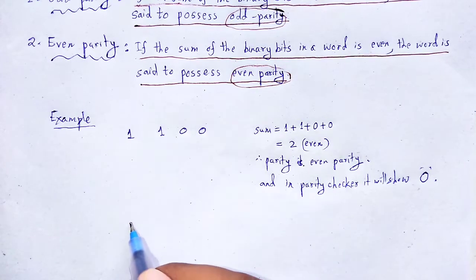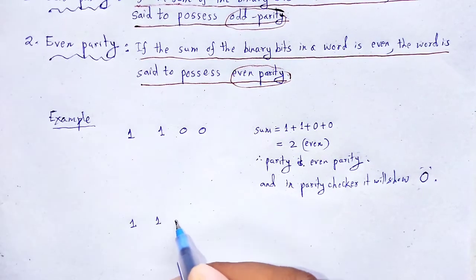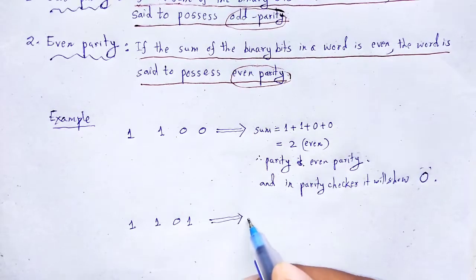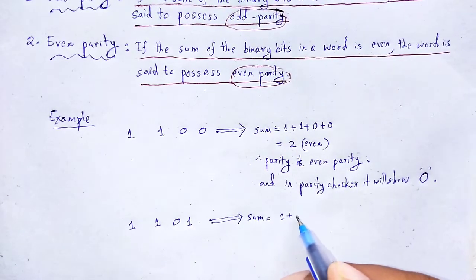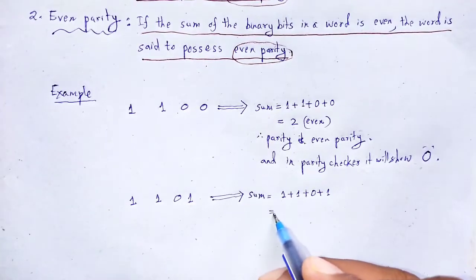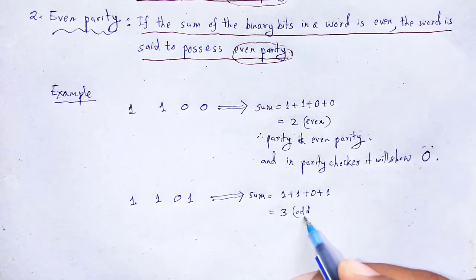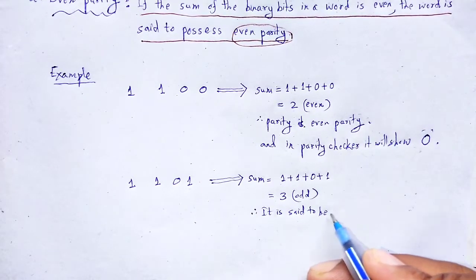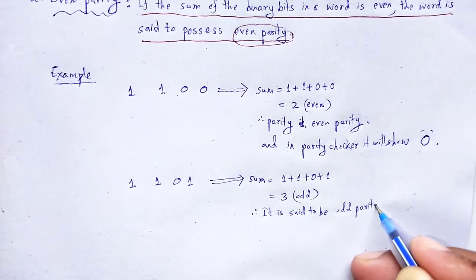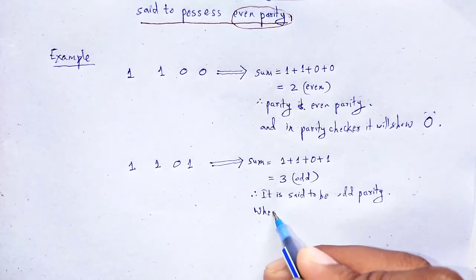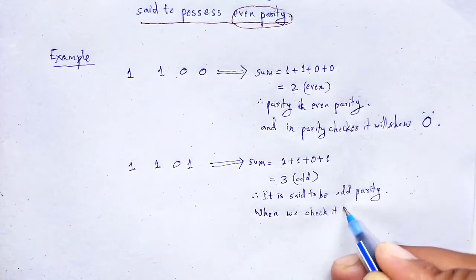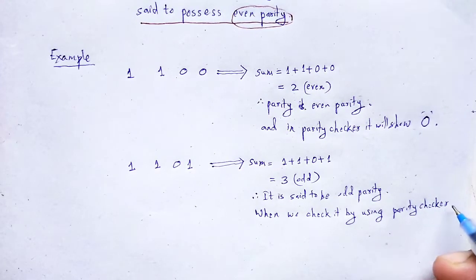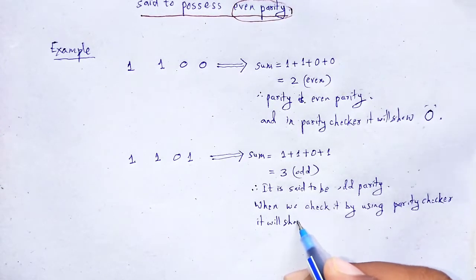Similarly, for the code 1 1 0 1, here the sum of the binary bits is 1 plus 1 plus 0 plus 1, it will be 3. 3 is an odd number, the parity is odd parity. Therefore, it is said to be odd parity. When we check it by using parity checker, it will show 1.